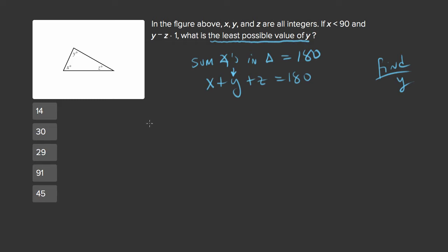But we are given a bunch of other pieces of information which we can plug in. For example, we're told that y is equal to z minus 1. And we're told that x is less than 90.